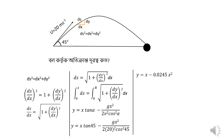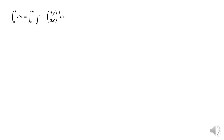So dy by dx is equal to 1 minus 0.0245 into 2x, which gives dy by dx equals 1 minus 0.049x. Therefore, the square root of 1 plus dy by dx whole square is computed for the arc length integrand.